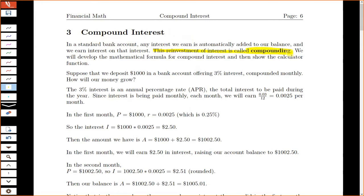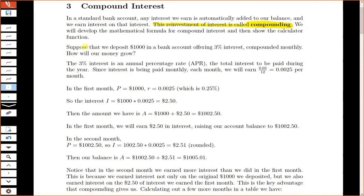So what I'm going to do is we're going to develop a math formula for compound interest, but then I'm going to show you a couple different ways to compute it. Here's kind of the idea. We'll look at this example. Let's suppose we deposit $1,000 in a bank account. It offers 3% interest compounded monthly, and we want to look at how our money will grow.